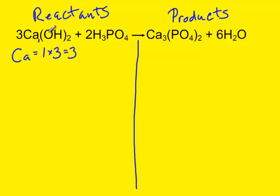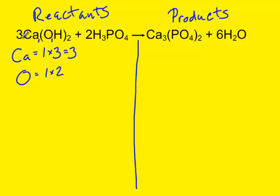Now we are inside parentheses, so the next element is O. Same process. Is there a subscript? No, so it's an invisible one. Is it inside parentheses? Yes, which means we must deal with the number outside the parentheses — a 2. So 1 times 2. Is there a coefficient? Yes, there's a 3. We must also consider that. 1 times 2 times 3 gives us 6.